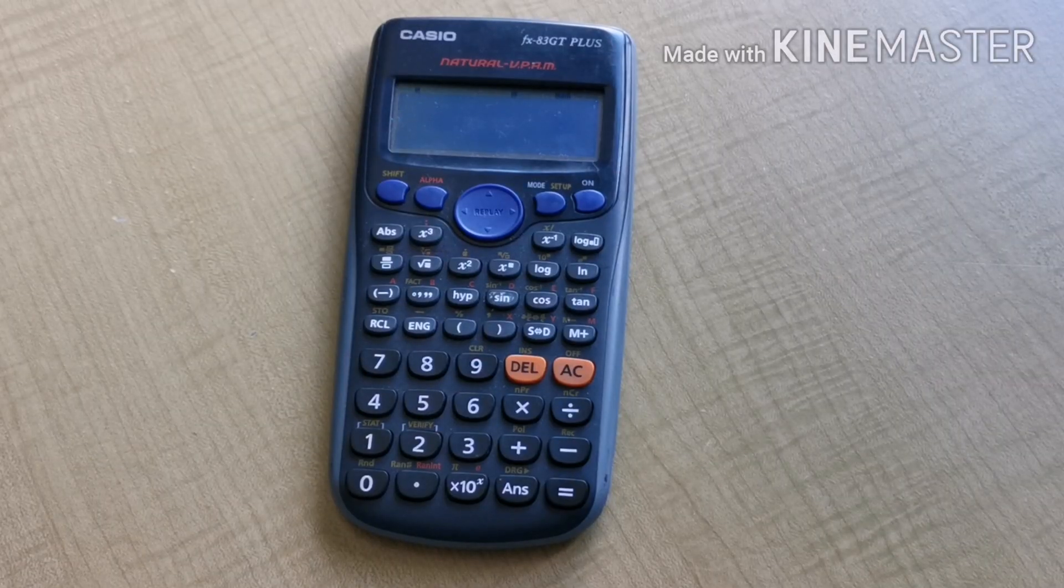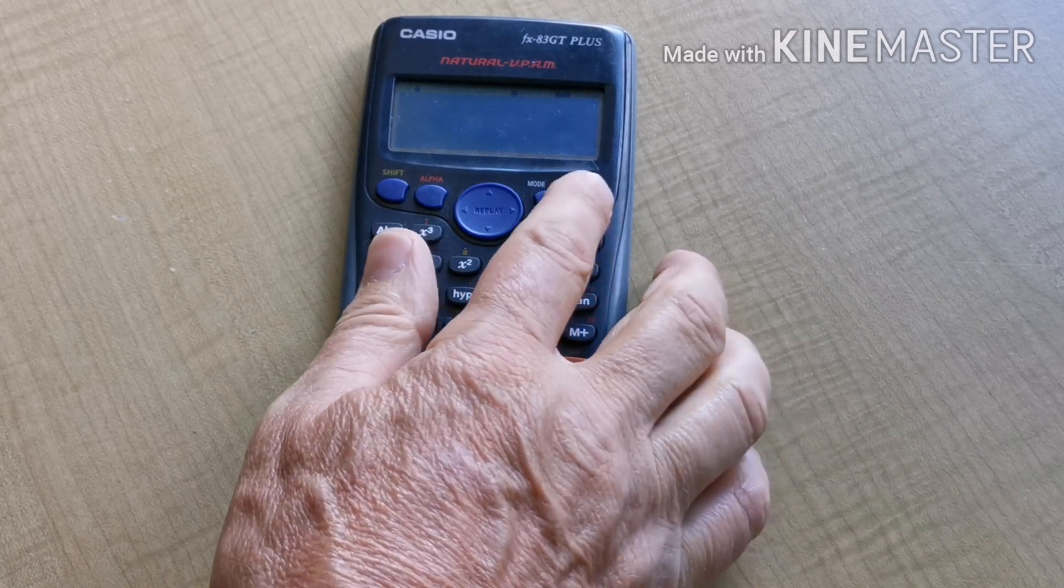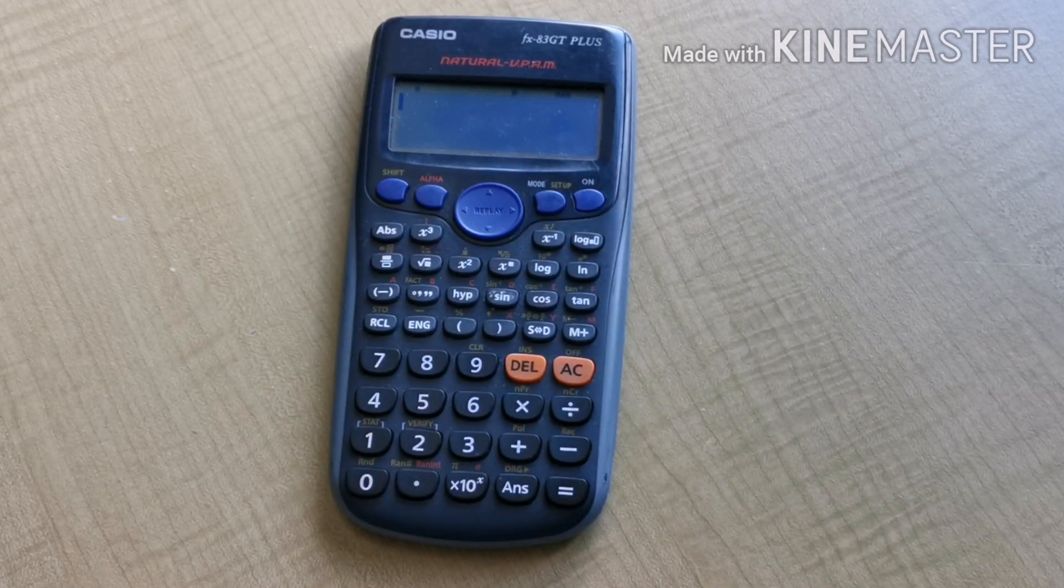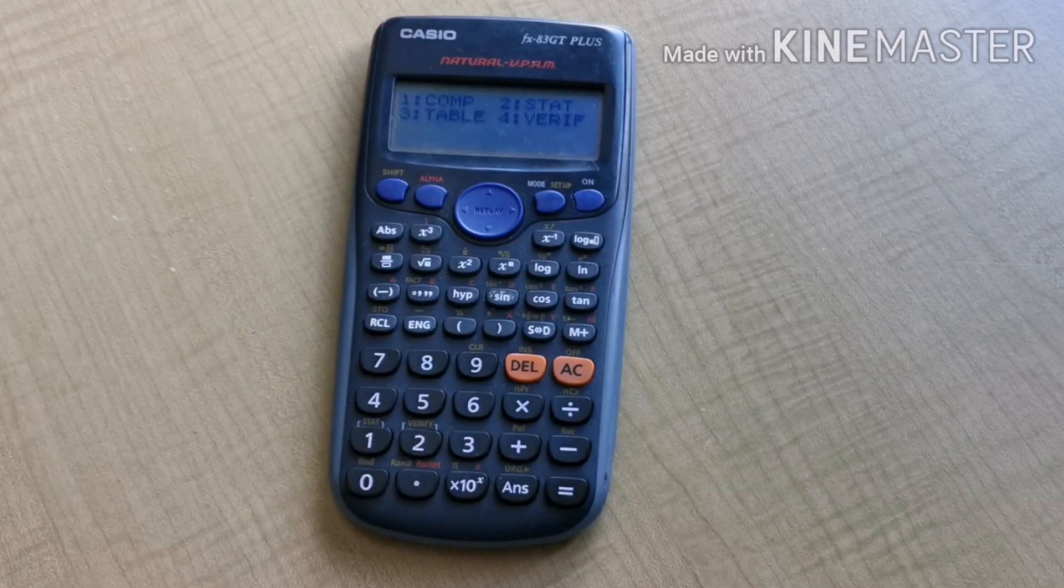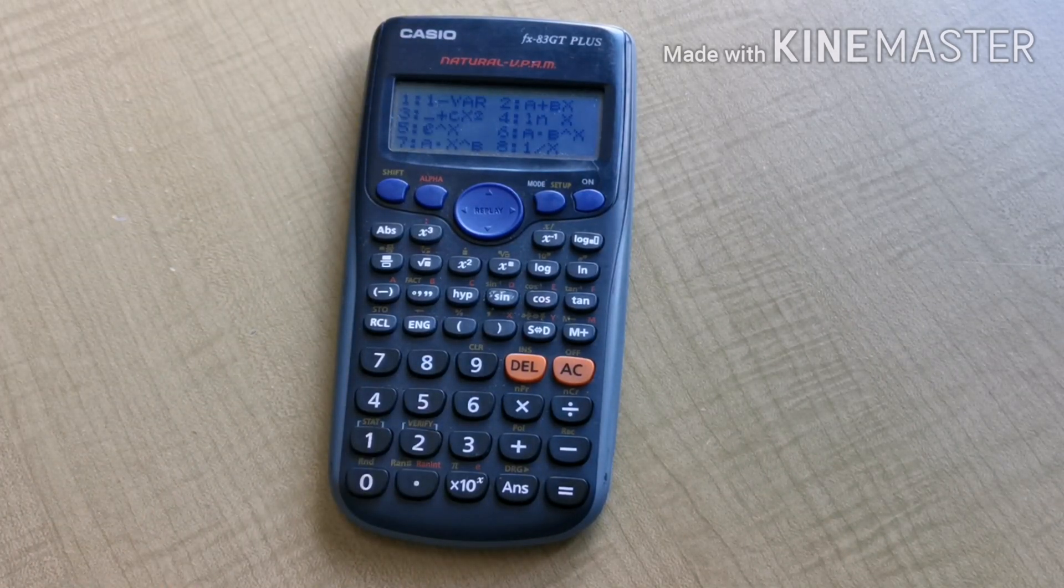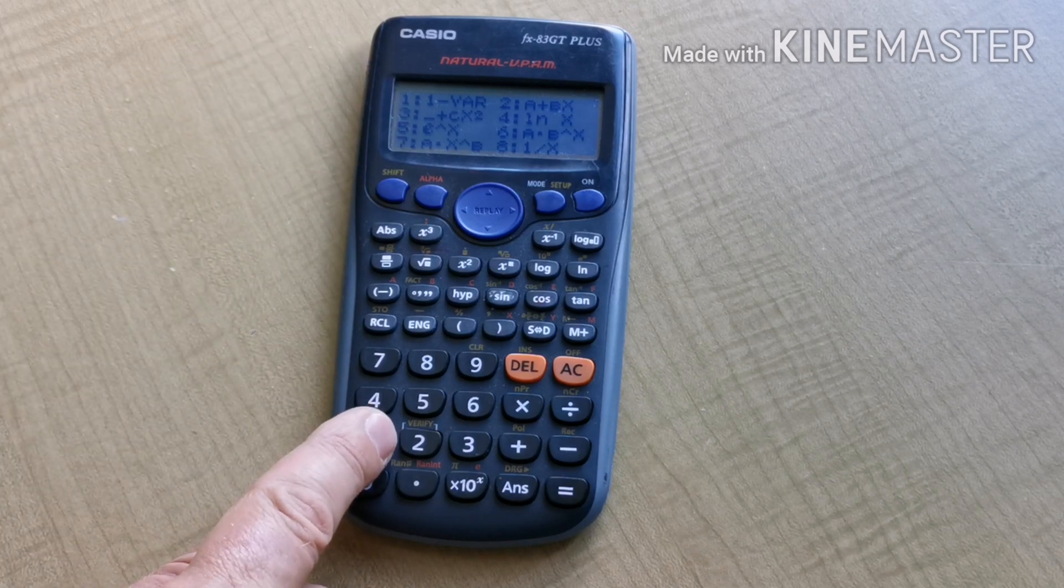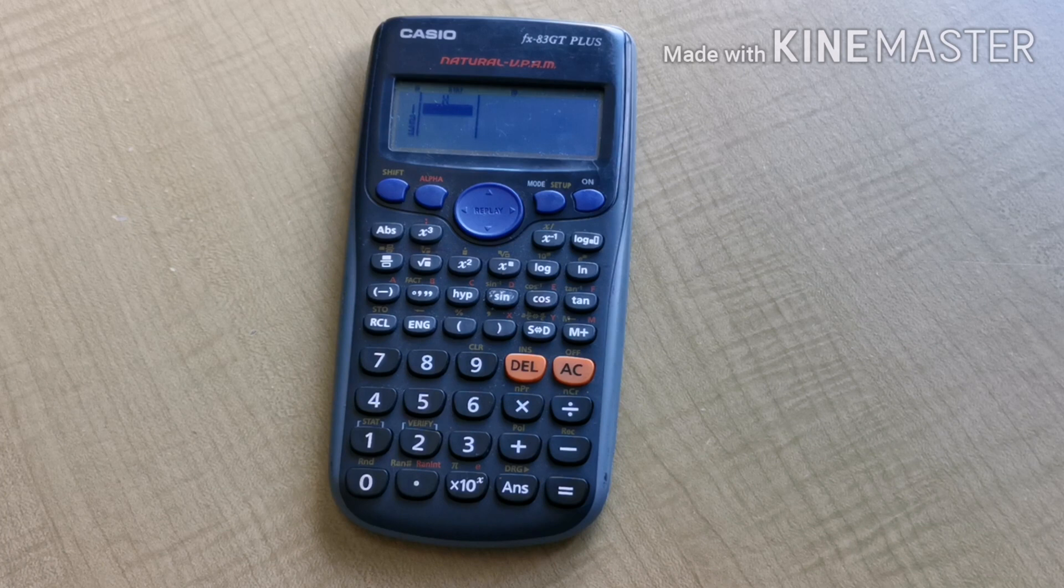We're now going to look at stat mode on this calculator, Casio FX83 GT Plus. Having turned the calculator on, first thing is press the mode key. Number 1 is computation, number 2 is statistics. Press number 2. That gives us some options. Choose the simplest option, number 1 for one variable. Here's where we can enter our data.